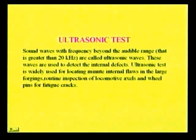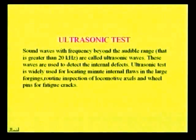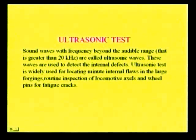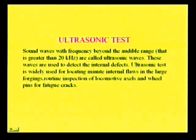The ultrasonic test uses sound waves with frequency beyond the audible range — greater than 20 kHz. There are two types: infrasonics (below 20 Hz) and ultrasonics (above 20,000 Hz or 20 kHz). Ultrasonic waves are used for finding internal defects. The ultrasonic test is widely used for locating minute internal flaws in large forgings, for routine inspection of locomotive axles and wheel pins, and for detecting fatigue cracks.